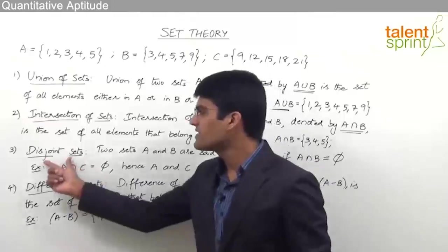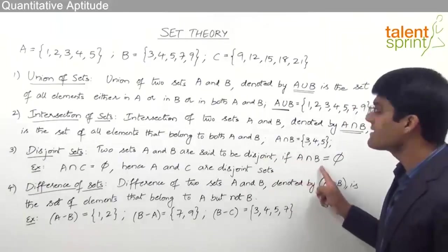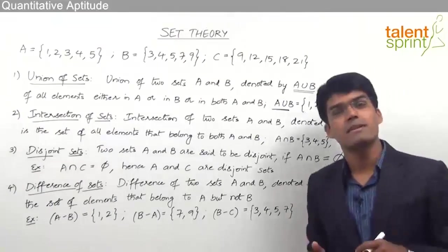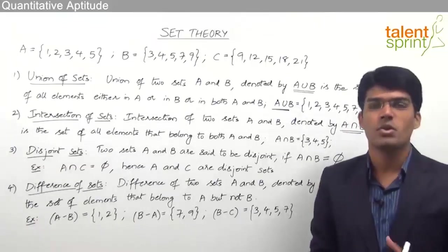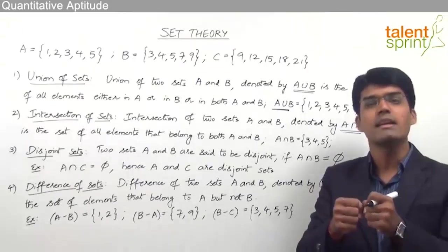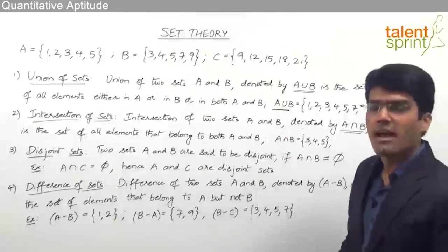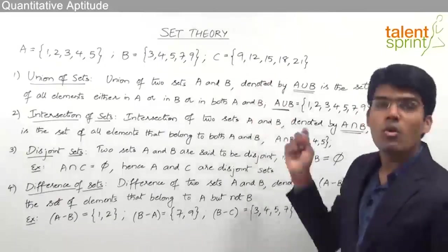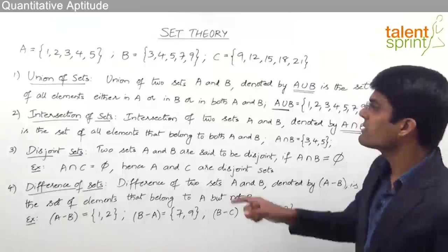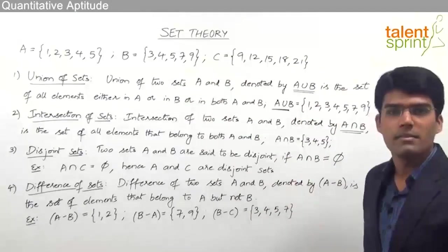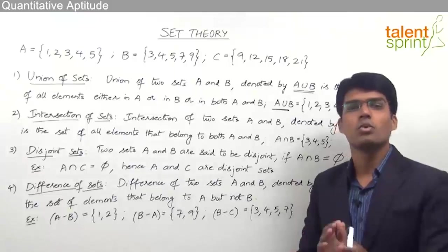The next operation is disjoint sets. Two sets A and B are said to be disjoint if A ∩ B equals a null set. Whenever the intersection of two sets results in a null set, those two sets are called disjoint sets — meaning there is no connection or overlapping between them. For example, A and C are disjoint sets because they share no common element and A ∩ C is a null set. B and C are not disjoint because B ∩ C equals {9}, having one common element.